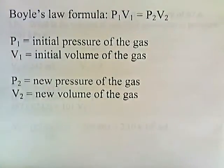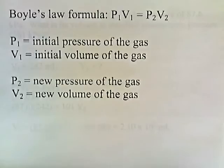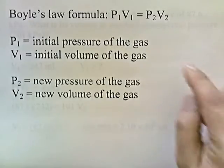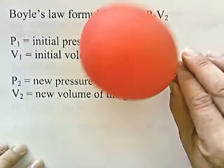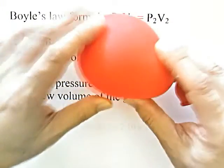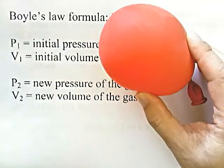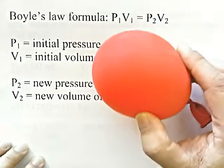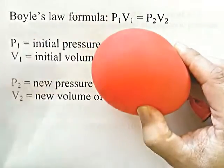Here's our formula. Boyle's Law formula is P1V1 equals P2V2. P1 is the initial pressure of the gas and V1 is the initial volume of the gas, or the initial size of the balloon. P2 is the new pressure of the gas and V2 is the new volume of the gas. The pressure of the gas is the pressure inside the balloon, and the pressure inside the balloon matches the atmospheric pressure pushing outside the balloon.